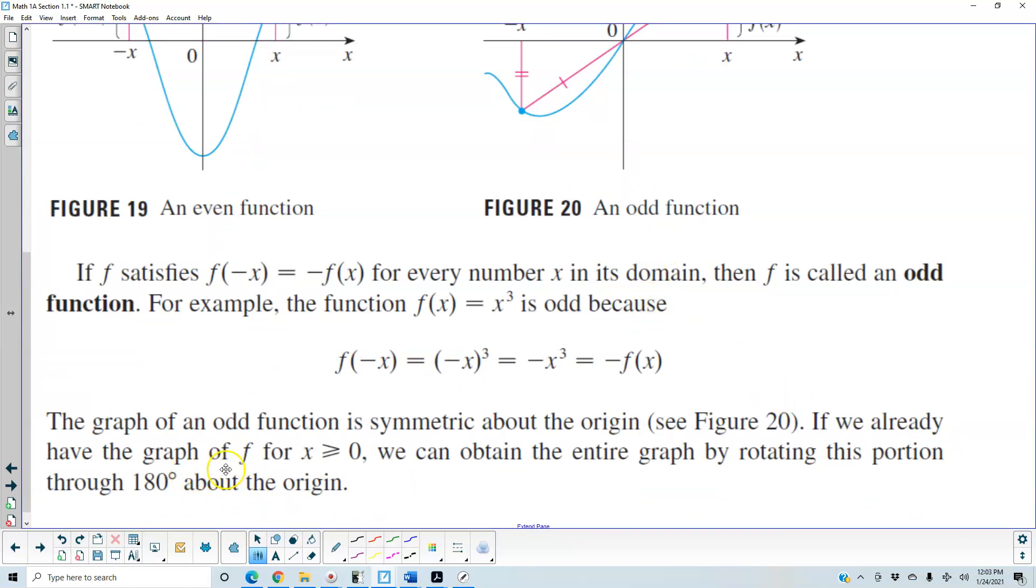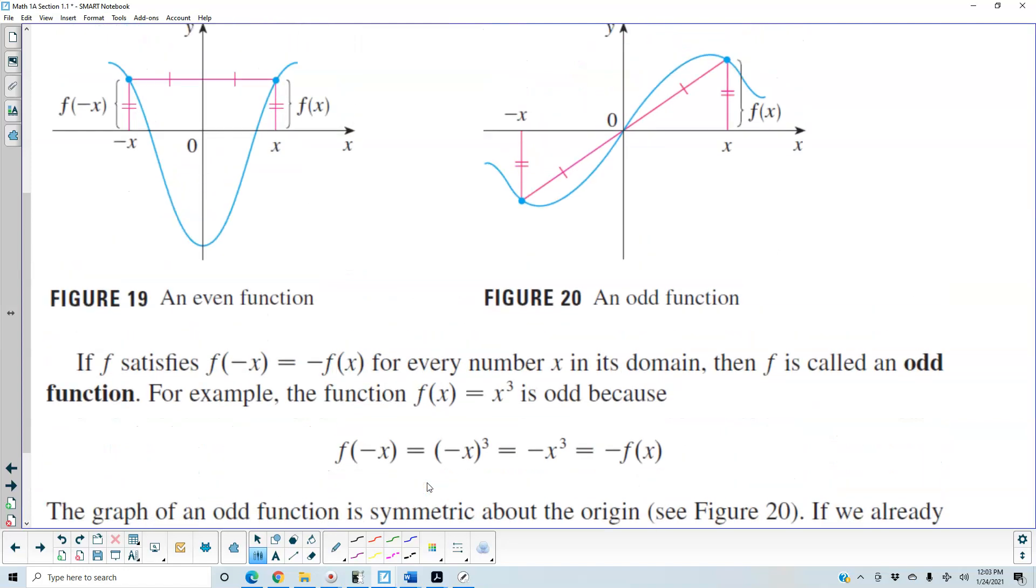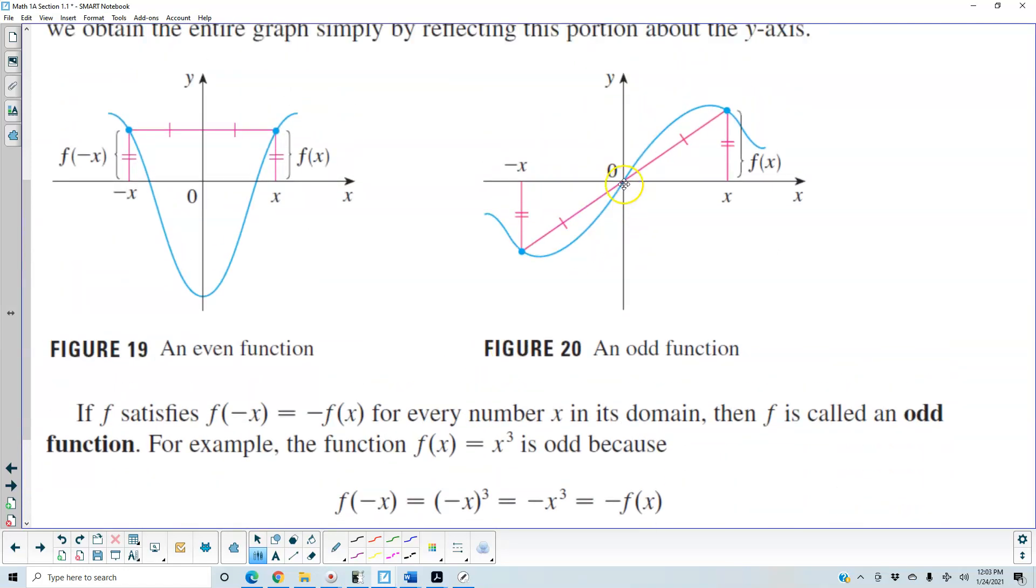If we already have the graph of f for x ≥ 0, we can obtain the entire graph by rotating this portion through 180 degrees about the origin. If you can rotate it 180 degrees about the origin and end up back in the same position, it's an odd function.